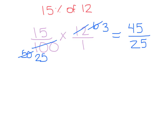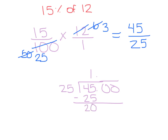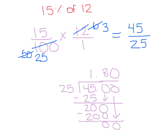We want to simplify our answer, so we do 45 divided by 25. 25 goes into 45 once with 20 left over. Bring down the zero — 25 goes into 200 eight times. 25 times 8 equals 200. Subtract and you get zero. Bring down our last zero — 25 goes into zero, zero times. So our answer is 1 and 80 hundredths, or 1 and 8 tenths. So 15% of 12 would equal 1.8.